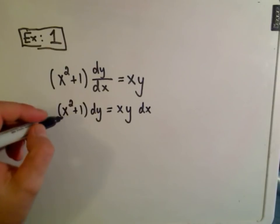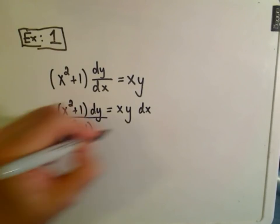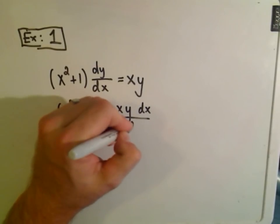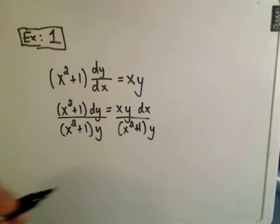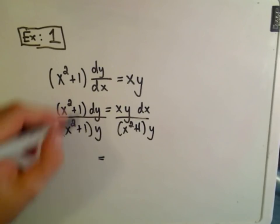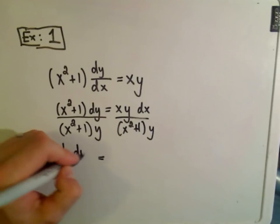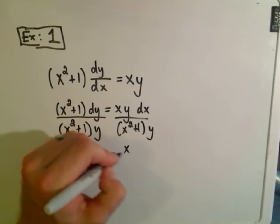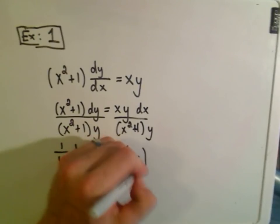Okay, I want to get the x's on one side, so I'm going to divide both sides by x squared plus 1. I'm also going to divide both sides by y at the same time. On the left side, then, I'll be left with 1 over y dy. And then on the right side, I'm left with x over x squared plus 1 dx.